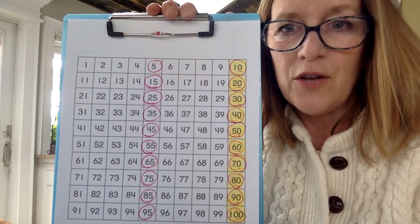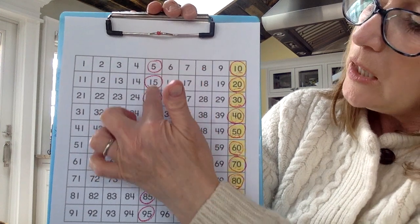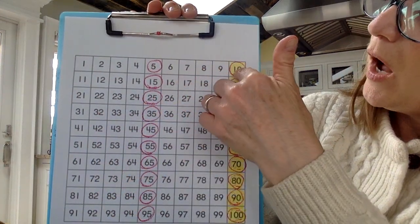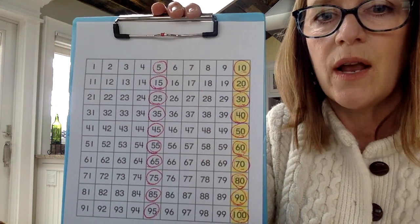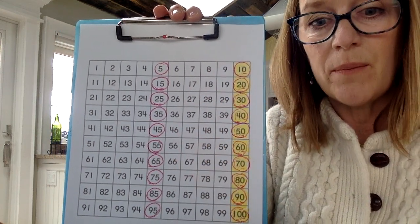So there are some very interesting things that we notice here, right? We have a column that ends in fives and then we have a column that ends in zeros. And the column that ends in zeros is our skip counting by tens.